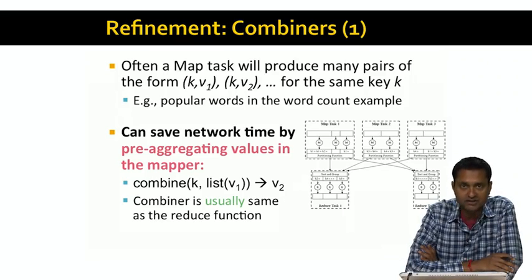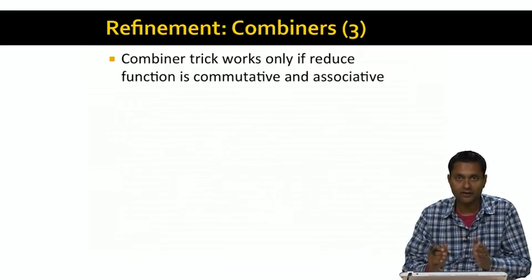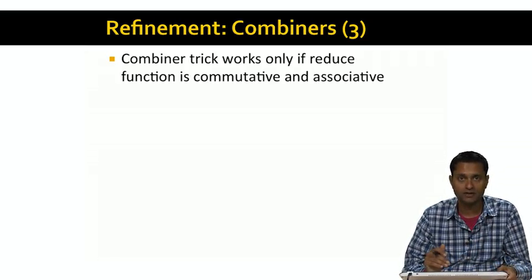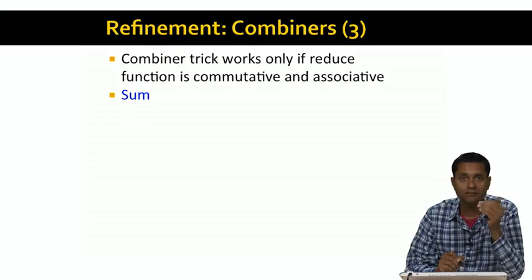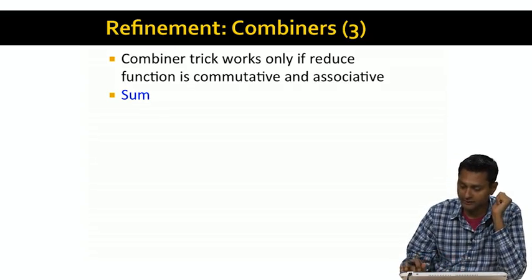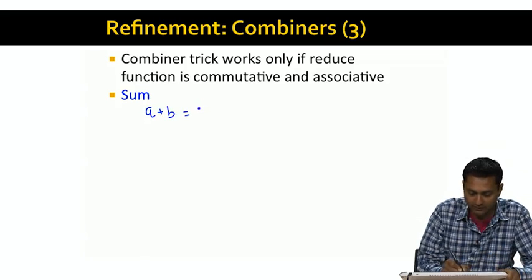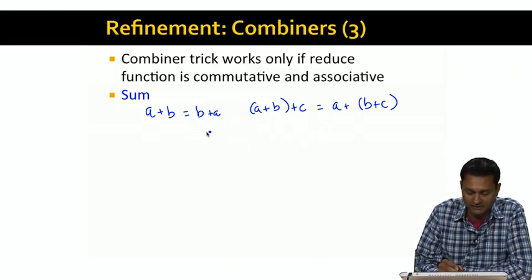Usually the combiner is the same function as the reducer. So if the reducer adds up its input values, the combiner does the same thing as well. However, we have to be careful, because this trick of using the combiner works only if the reduce function is commutative and associative. For example, if the reduce function is a sum function — you want to add up all the input values, as in the count example — the sum function is commutative and associative. By which we mean that a + b is the same as b + a (commutative property), and (a + b) + c is the same as a + (b + c) (associative property).